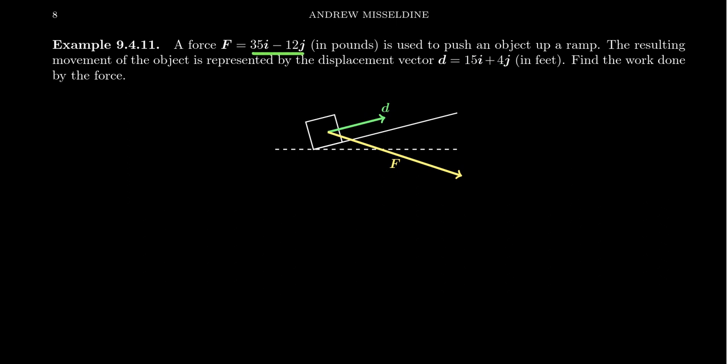This one seems weirder to set up because we're describing both the force and displacement vector in terms of unit vectors—this is the algebraic form. The trigonometric form is more natural to describe, but when it comes to calculations, it's much easier to use algebraic form. This means 35 pounds to the right, 12 pounds downward. The displacement is 15 feet to the right, 4 feet up.